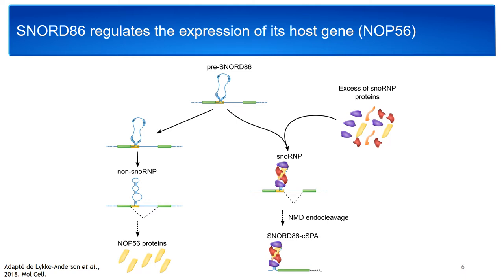In a 2018 study, it was shown that the snoRNA SNORD86, embedded in the NOP56 gene — a box C/D snoRNP core protein — can impact the alternative splicing of its host gene. When there is low abundance of snoRNP core proteins, the snoRNA will adopt a non-snoRNP conformation, leading to normal splicing and production of NOP56 protein. In the case where there is an excess of snoRNP core proteins, those proteins bind to the snoRNA sequence, leading to alternative splicing and a transcript targeted by NMD. This transcript is translocated into the cytoplasm, where the snoRNP sequence prevents further degradation of the 3' downstream fragment.